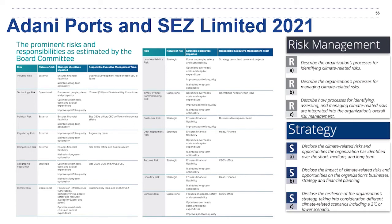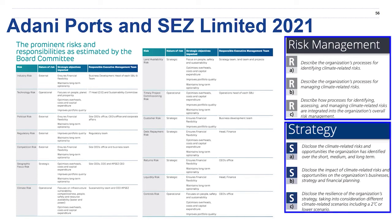For our next example, take a look at this excerpt from Adani Ports. Think about what elements of this extract are particularly good, what could use further information, and which elements you would think about adopting in your own practices. I've included on the right-hand side the recommended disclosures for both risk management and strategy, because both could be useful when reviewing this particular disclosure.